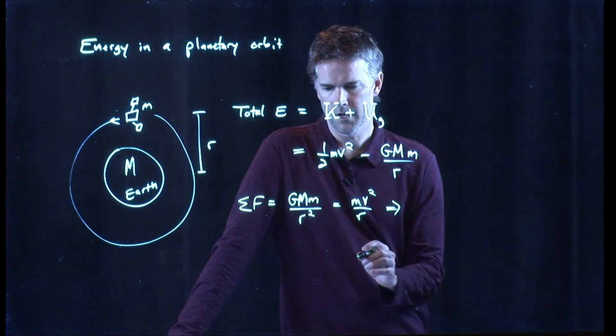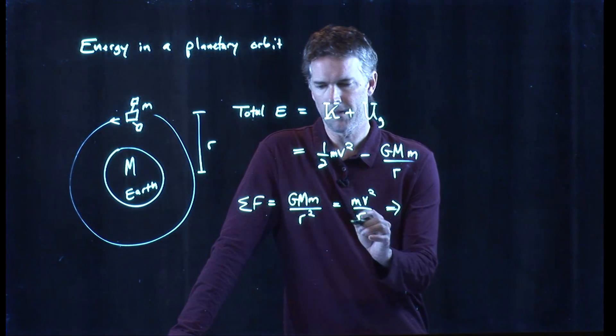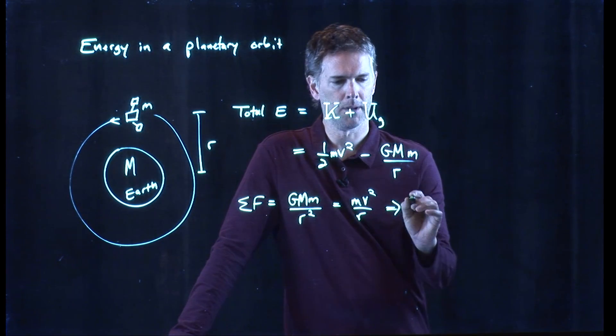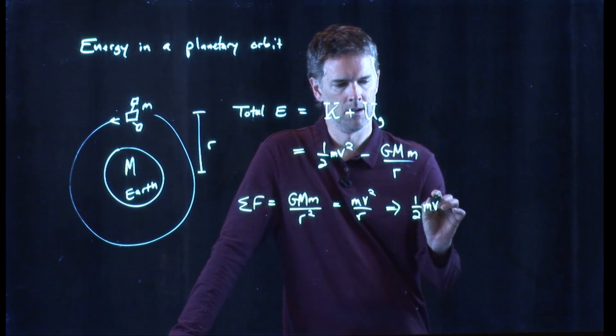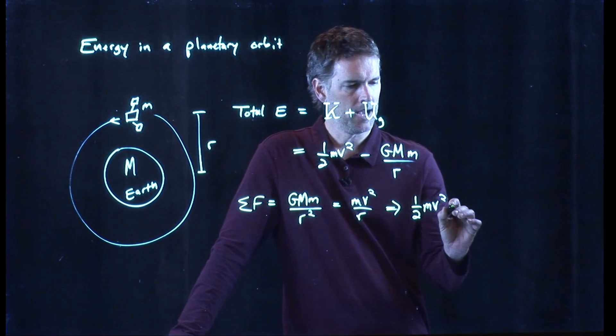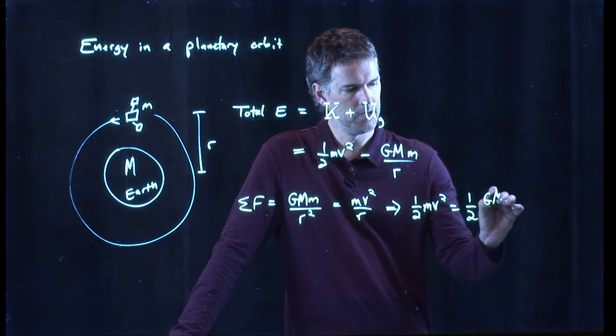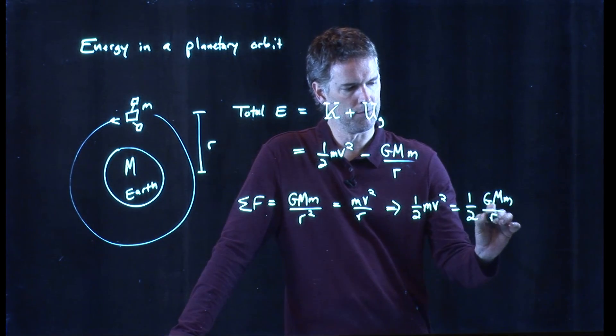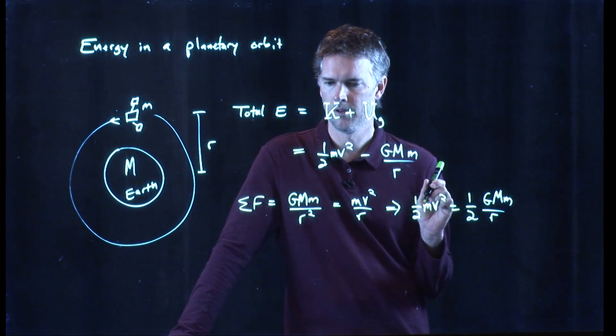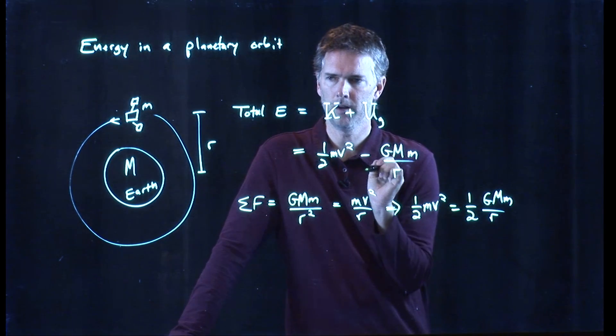Alright, what do we do? Well, let's multiply both sides by an r. We'll get rid of that r and we'll get rid of one of those. And then let's multiply both sides by a half. And if I do that, this side becomes one half mv squared, and the other side becomes one half GMm over r. Remember, we got rid of one of the r's, so we just have one left.